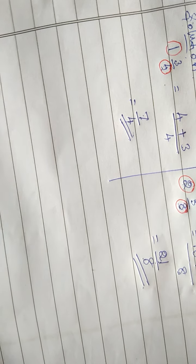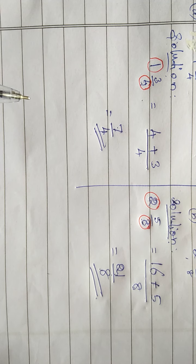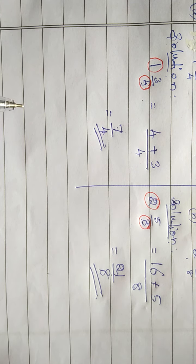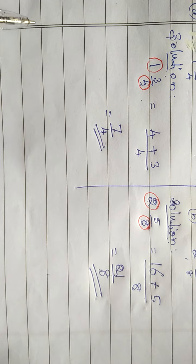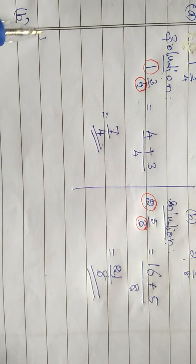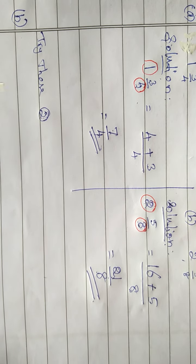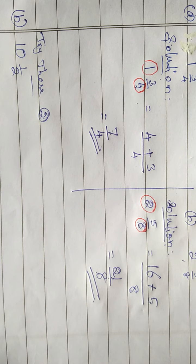In the same page number 77, try these: question number 2 — convert the following mixed fractions into improper fractions. A part: 3 and 5 by 9. B part: 10 and 1 by 2. And C part: 5 and 7 by 11. I will solve B part.